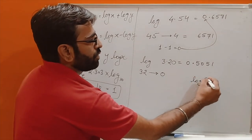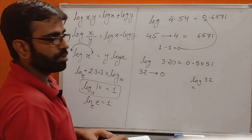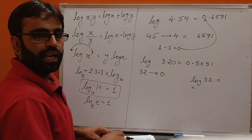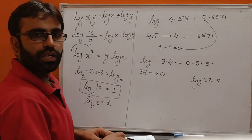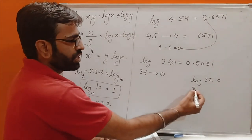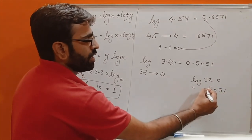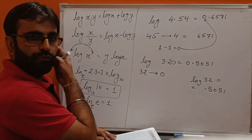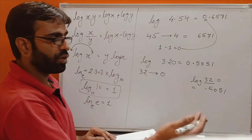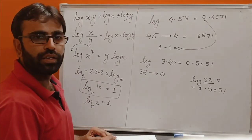Suppose we have log 32. Again the 3rd digit is considered as 0, so we treat it as 32.0. The log value of 32 in column 0 is again 5051. Now there are 2 digits in the characteristic, so 2 − 1 = 1. The value is 1.5051.